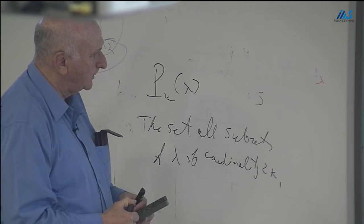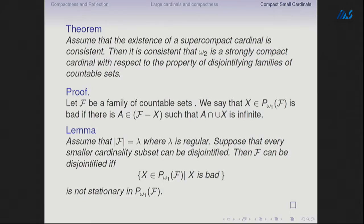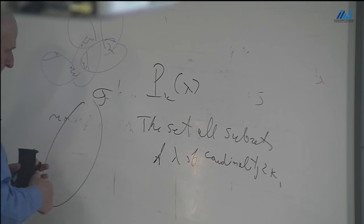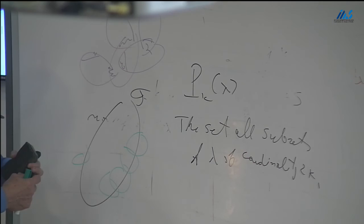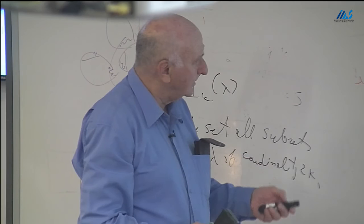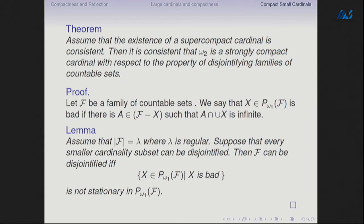P_{ω₁}(f) is the set of countable subsets, partially ordered by inclusion. For the family f of countable sets, we say a countable subfamily x ⊂ f is bad if you can find something outside — an outsider — that intersects the union of that family in an infinite set. So an outsider dares to pick something belonging only to the members of x. A simple lemma: if |f| = λ with λ regular, and every smaller cardinality subset can be disjointified, then f can be disjointified if and only if the set of bad countable subsets is not stationary in P_{ω₁}(f).